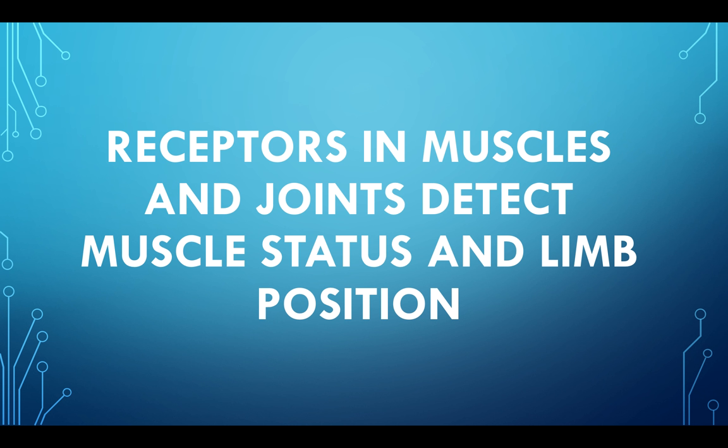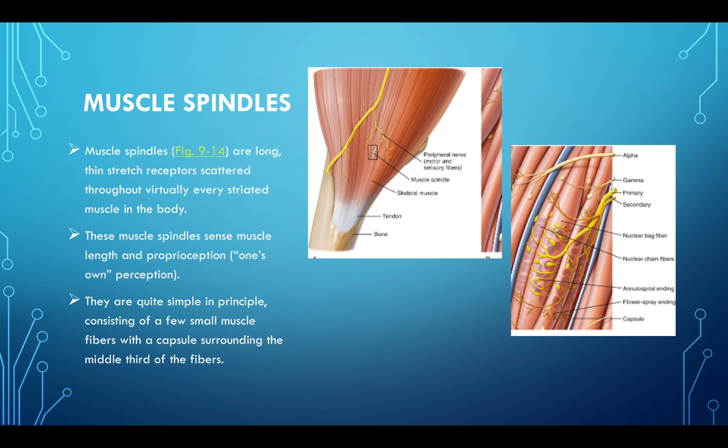Receptors in muscles and joints can detect muscle status and limb position. Muscle spindles are long, thin stretch receptors scattered throughout virtually every striated skeletal muscle in the body. They sense muscle length and proprioception — one's own perception of what's going on. Activation of these increases the brain's awareness of where it is in space. Exercise is good not just for appearance, but also to maintain a healthy brain.